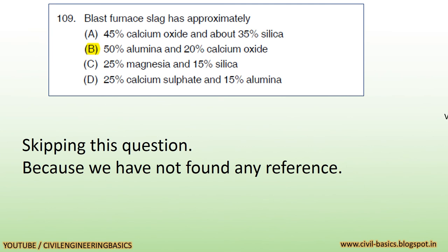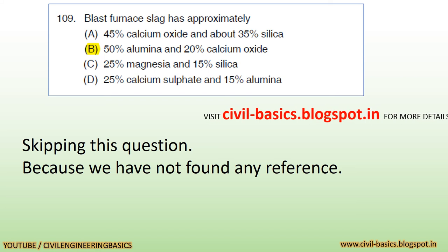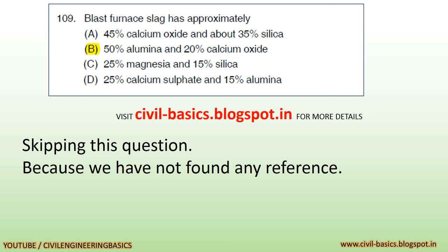Question: Blast furnace slag has approximately: a) 45% calcium oxide and about 35% silica, b) 50% alumina and 20% calcium oxide, c) 25% magnesia and 15% silica, d) 25% calcium sulfate and 15% alumina. We are skipping this question because of lack of references.